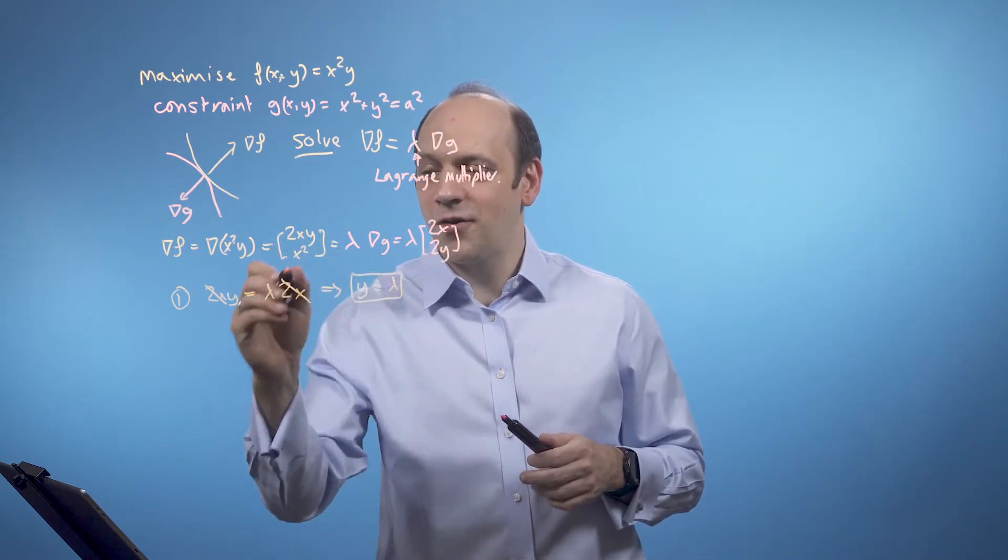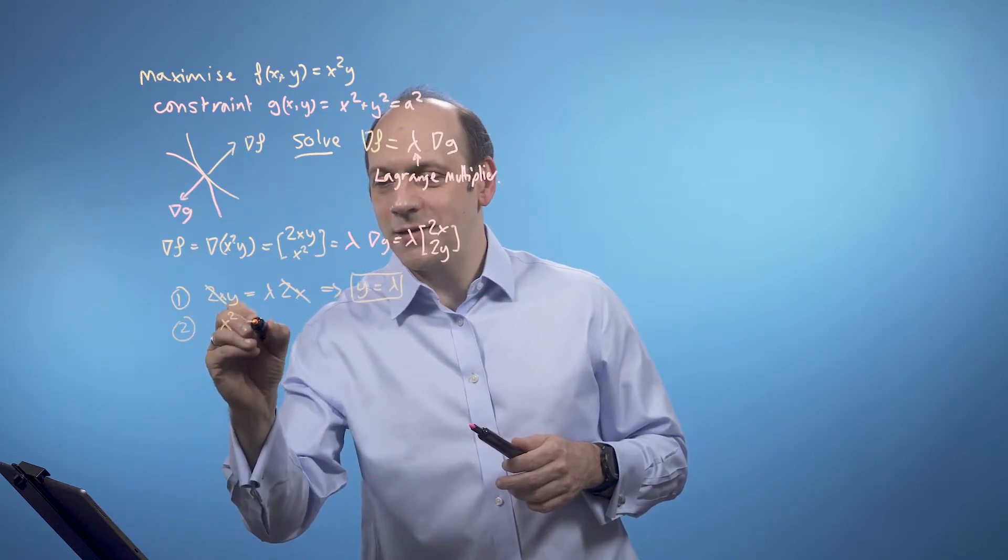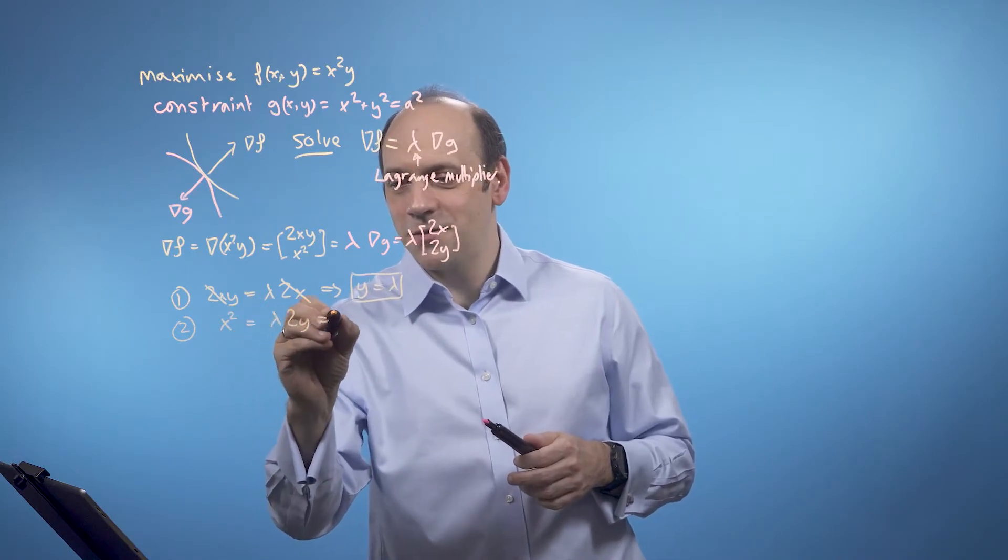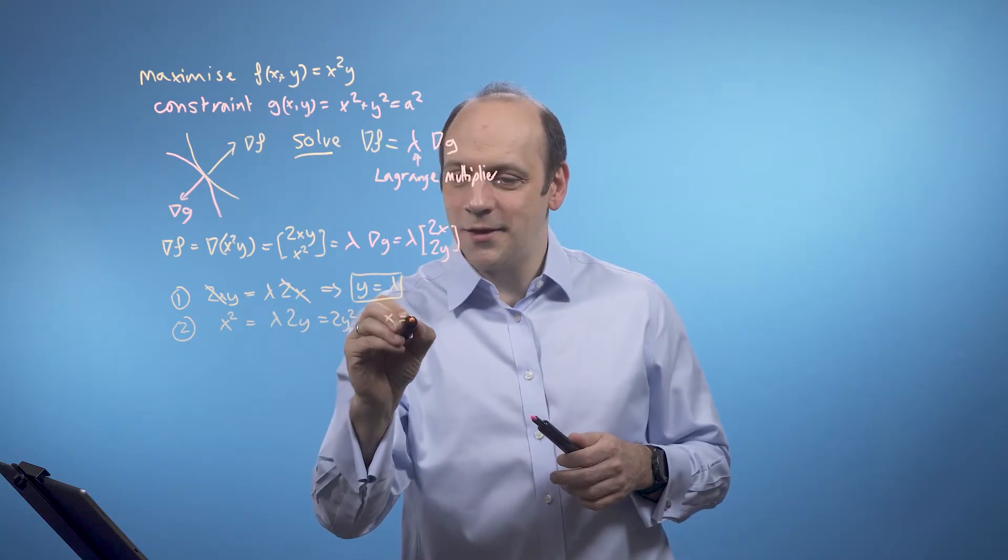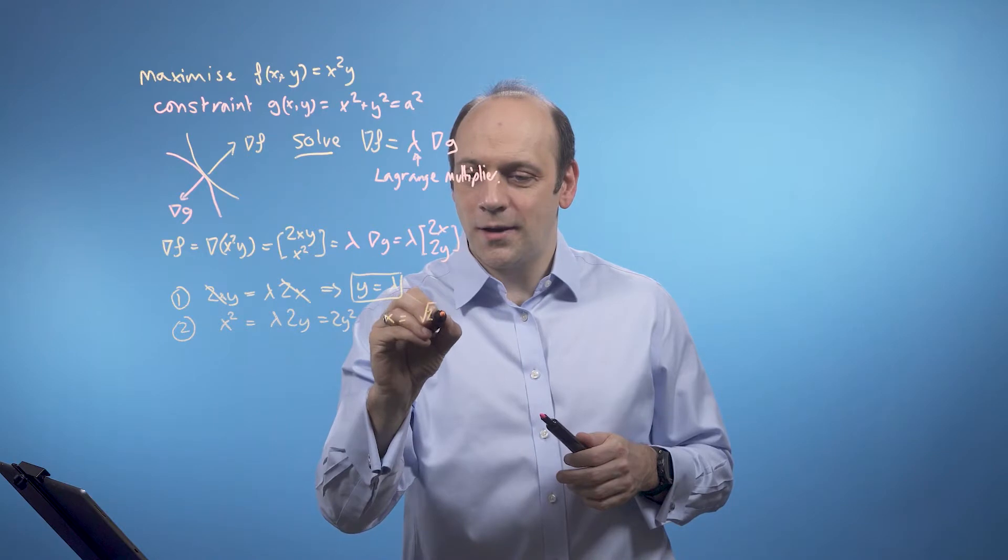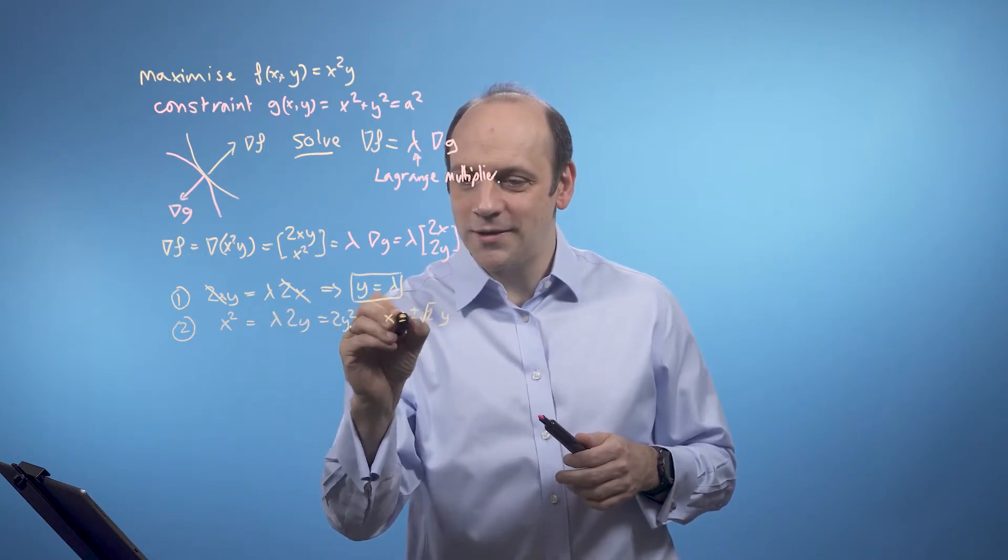If I take the second row, the y row if you like, I've got x squared is equal to lambda times 2y. But lambda is itself y, so that's equal to 2y squared. So I can say that x is equal to the square root of 2 times y. And because I've done the square root, I've got a plus minus here.